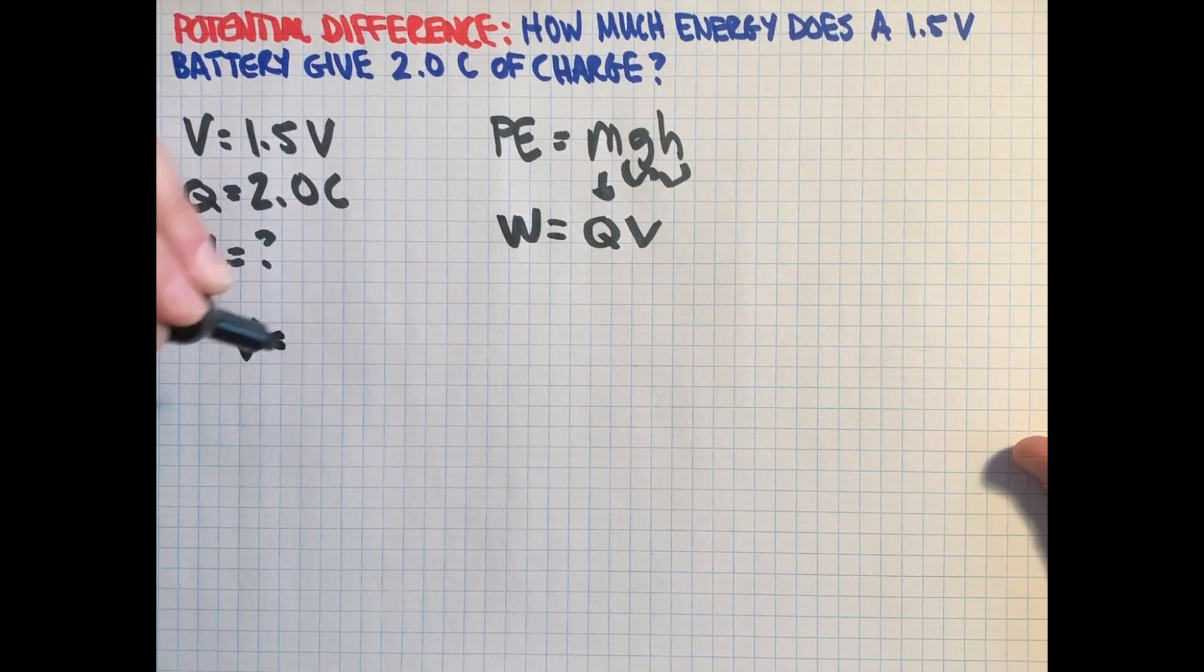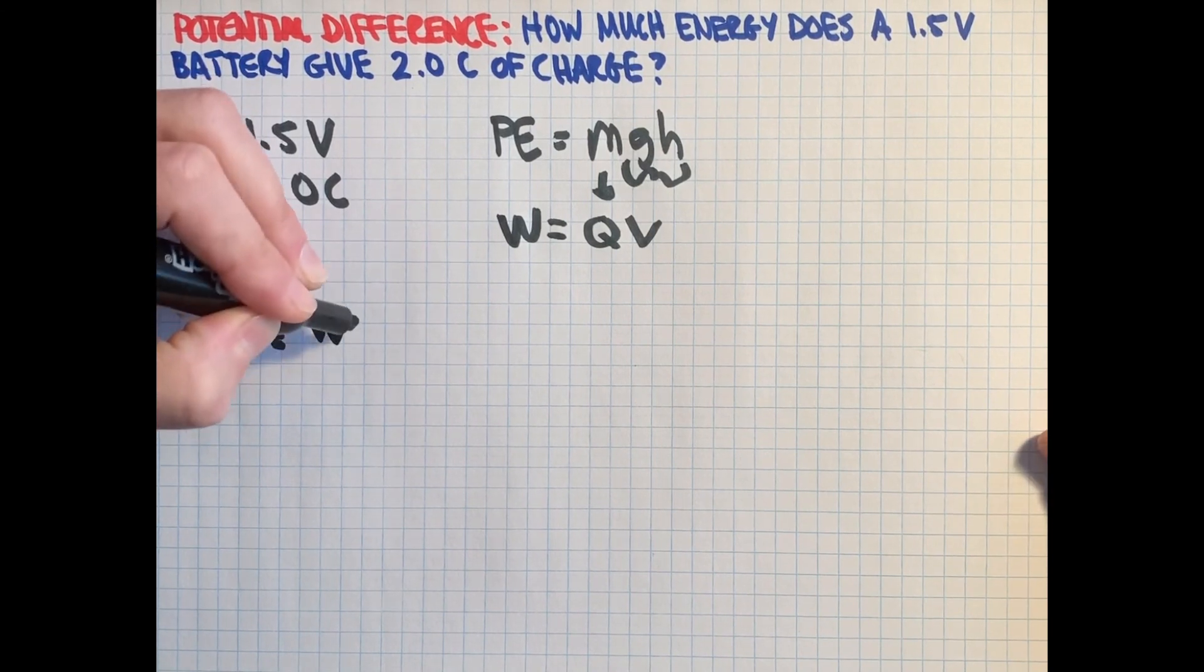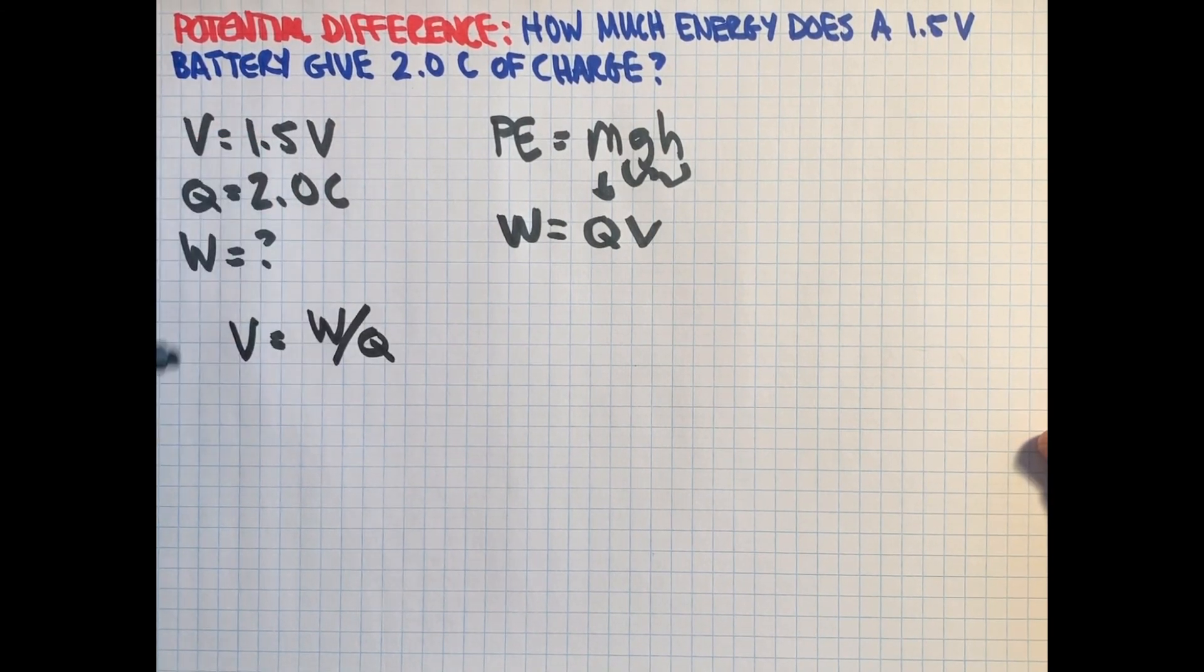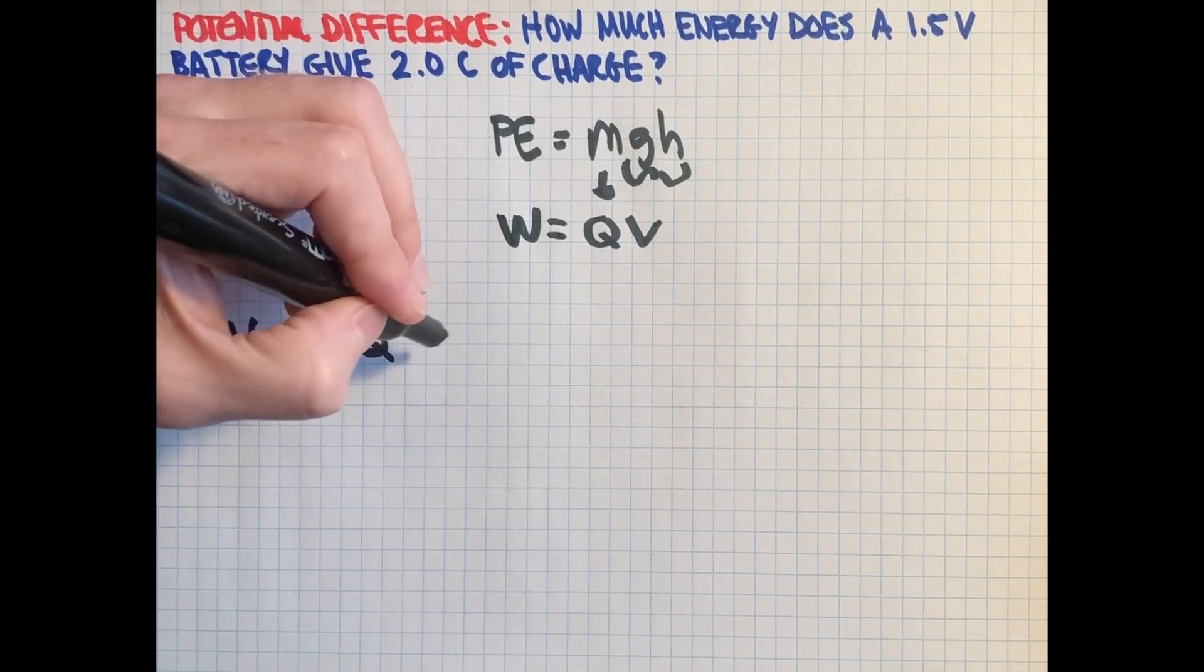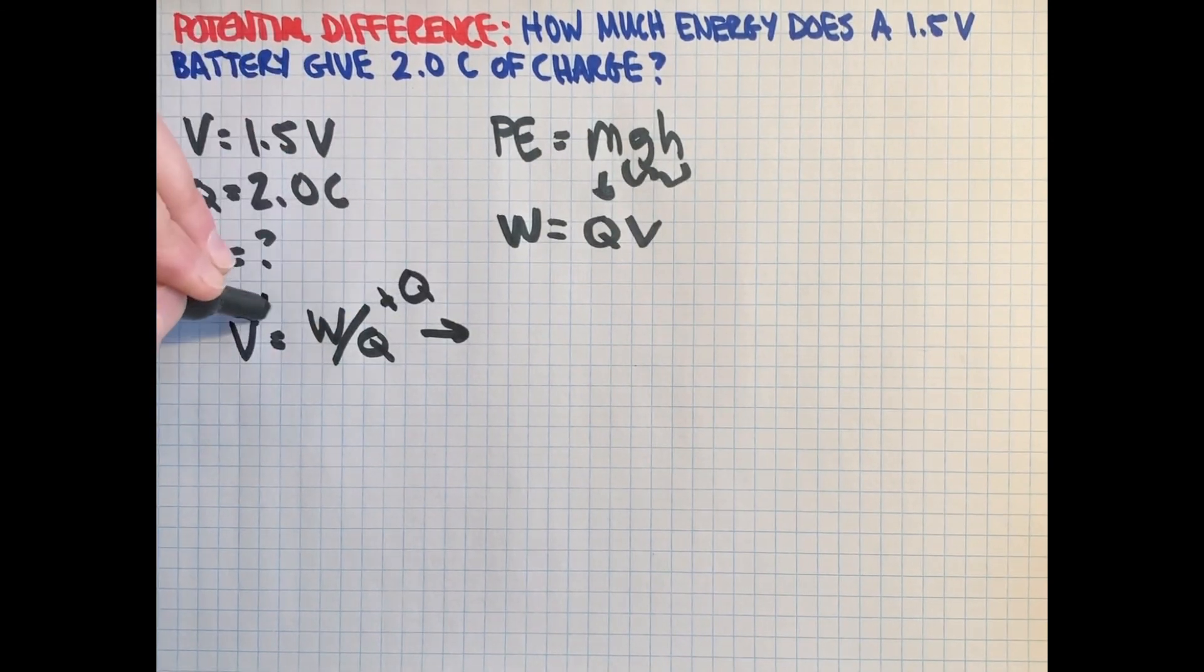So we can define voltage as the work done per charge. And in this case, we know the voltage and we know the charge and we just want to know the work. So we've multiplied both sides by Q in this case, the amount of charge available.